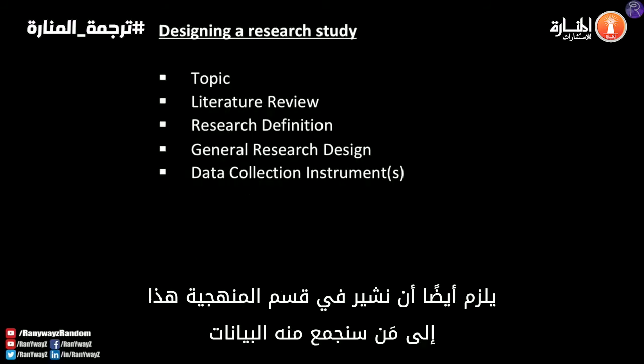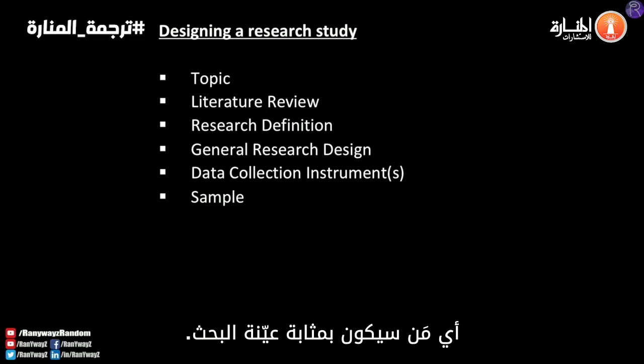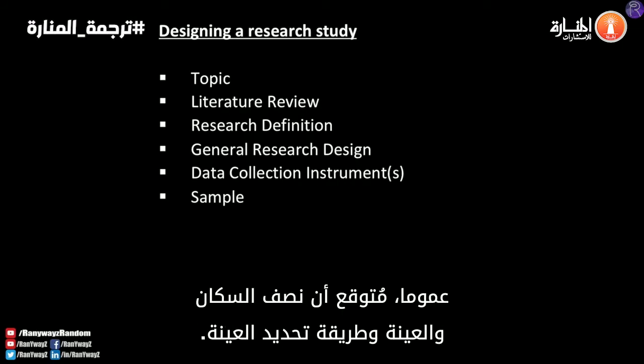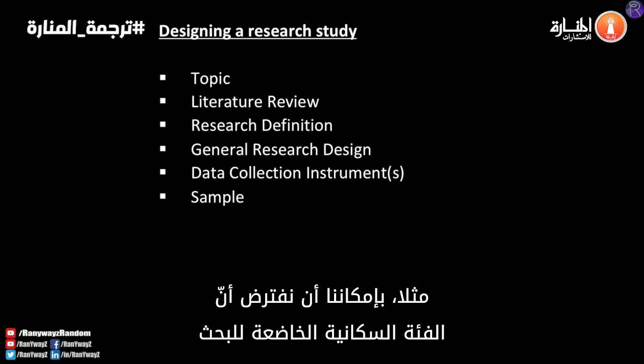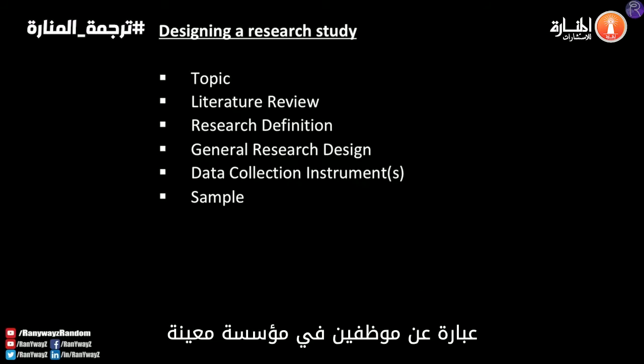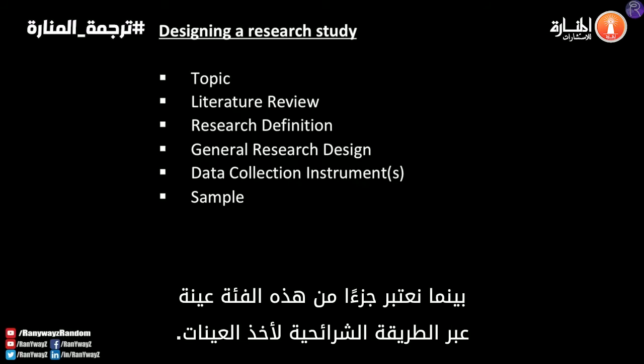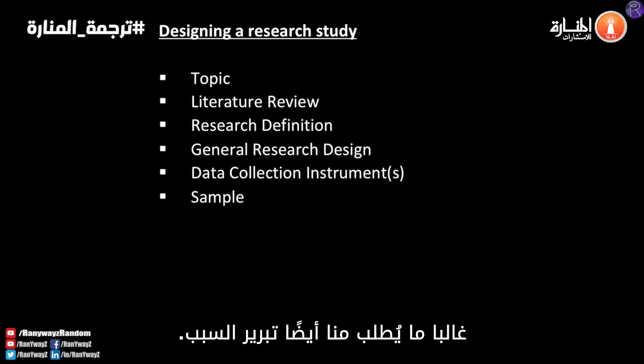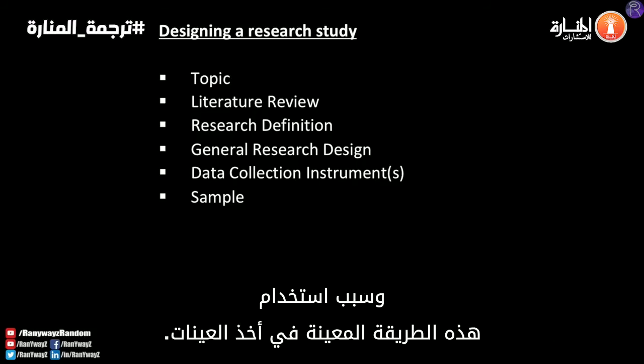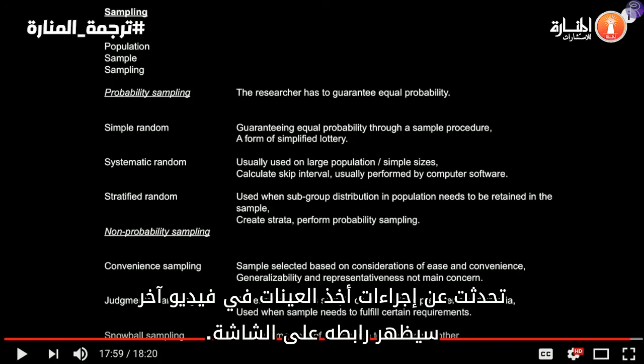We also need to indicate from whom we are going to collect data — in other words, who is going to be our sample. Generally speaking, we are expected to describe the population, the sample, and the sampling procedure. For instance, we might say that our research population is all employees of a certain organization, while a portion of this population will be taken as the sample via a stratified sampling procedure. Often times we are also required to motivate or justify why we use this sample and why we use a particular sampling procedure.